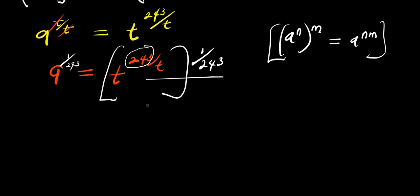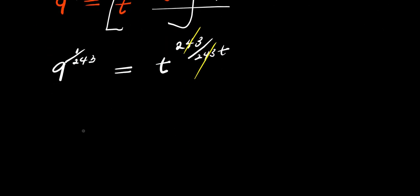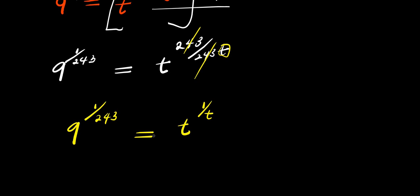So we are going to have 9 power 1 over 2/3 equals t power 2/3 times 1, which is 2/3 divided by t times 2/3. So from here, 2/3 eliminates 2/3, and we are going to have 9 power 1 over 2/3 equals t power 1 over 1 over t.